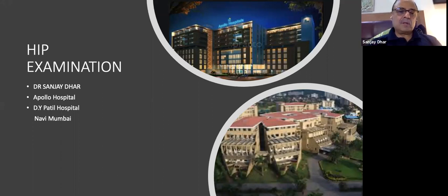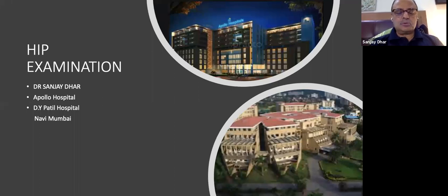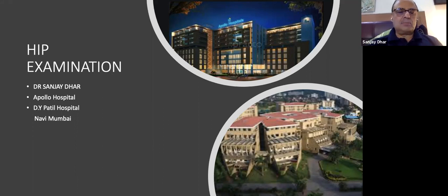As far as the exam is concerned, every PG has almost a 90–95% chance of getting a hip case in their exam. If you do a hip case well, consider yourself passed — because hip is a very mathematical examination. It is point-based: you present all the signs, you present all the gait findings, and if you present that very nicely, no examiner can dare to fail you.